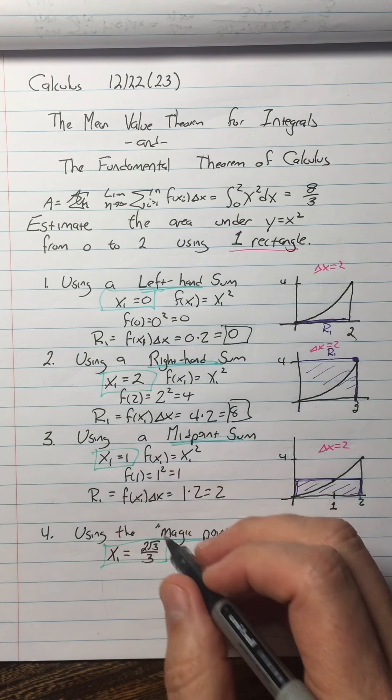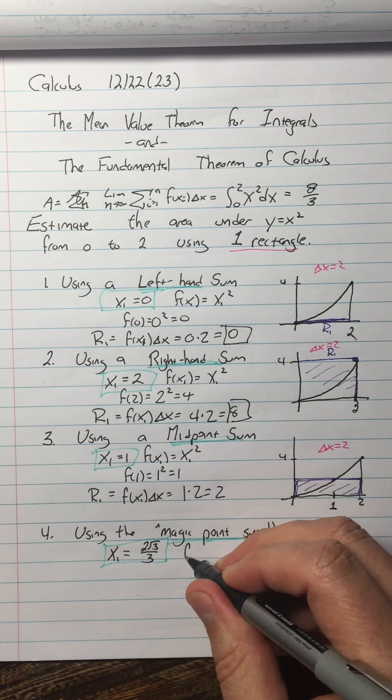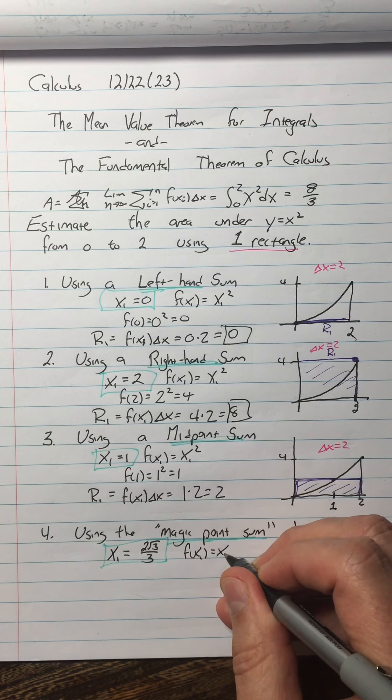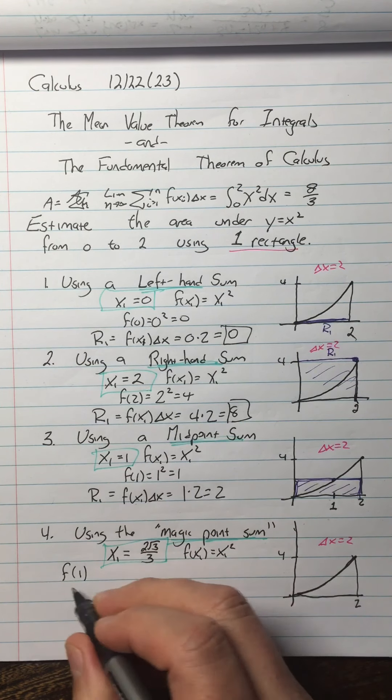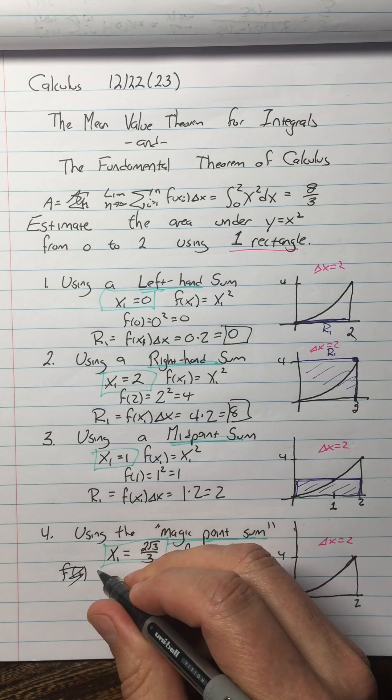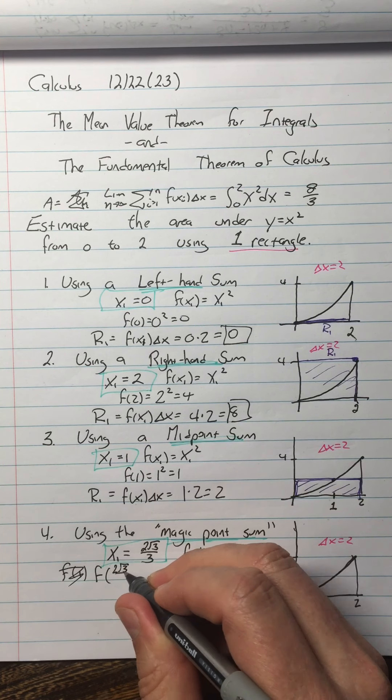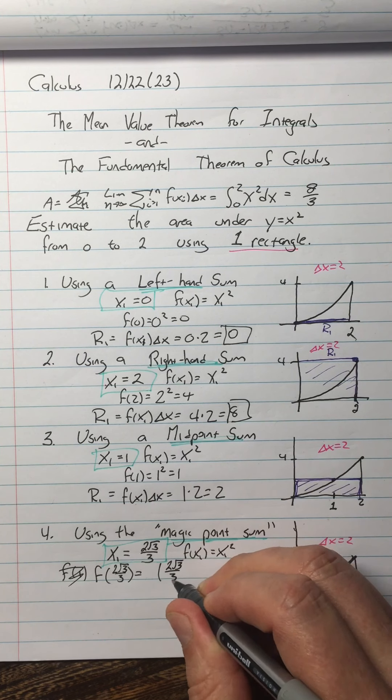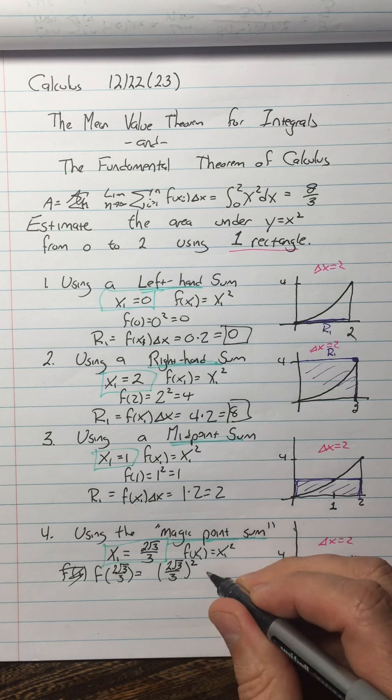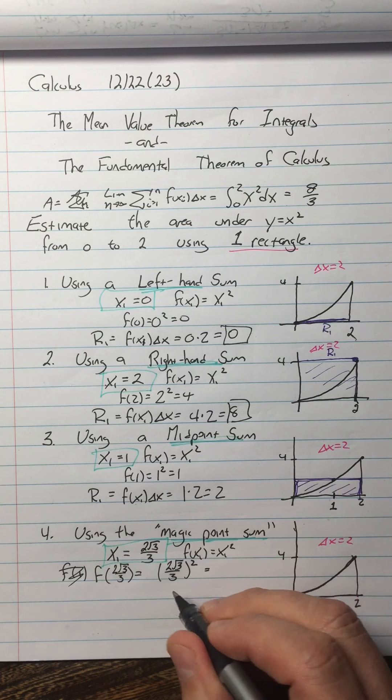And you're back. So our f of x1 is still x1 squared. So f of, oh sorry, it's not f of 1. We have to do f of 2 square root 3 over 3, which is 2 square root 3 over 3 squared, which is equal to 4 times 3 over 9. 4 times 3 over 9, which is 4 thirds.